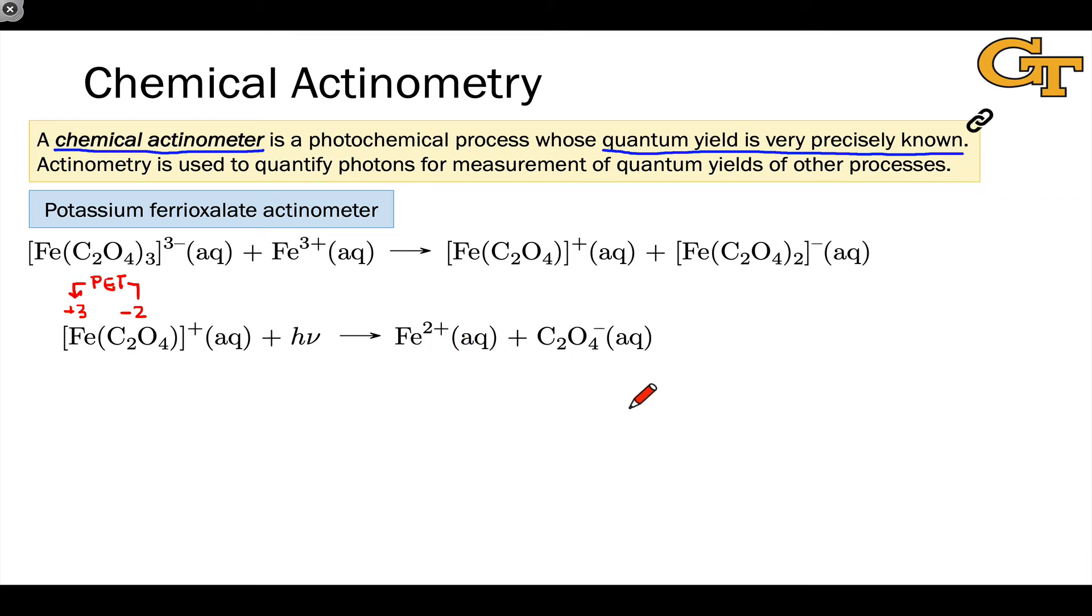Giving Fe2+ and C2O4-. What we're really dealing with here, the C2O4- anion, is a radical anion. And that can engage with another molecule of FeC2O4+ to form Fe2+ oxalate and 2CO2. This is just a basic redox process without the involvement of light.